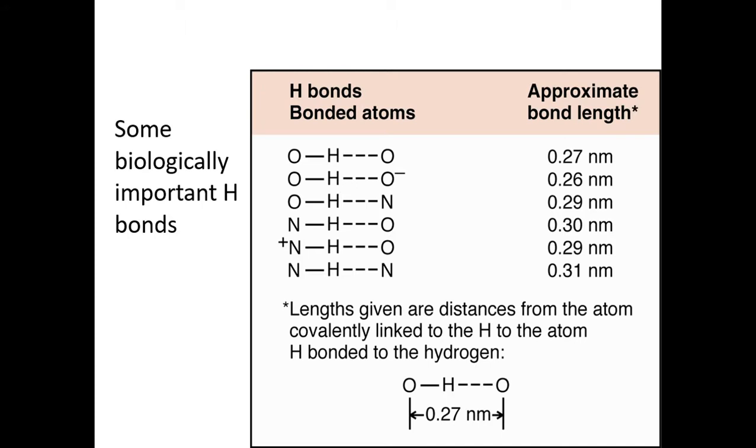So hydrogen bonds are very important in biological molecules. And here are the types of hydrogen bonds that can be formed, also the approximate bond length. Again, these are nanometers, very small distances. If we look, I should point out that this larger line between the O and the H is the actual covalent bond and the dashed line is the hydrogen bond. So hydrogen can form hydrogen bonds with fluorine, oxygen and nitrogen. We will not see fluorine hydrogen bonds in biological systems, but we certainly will see hydrogen bonds with oxygen, whether it is charged or uncharged.